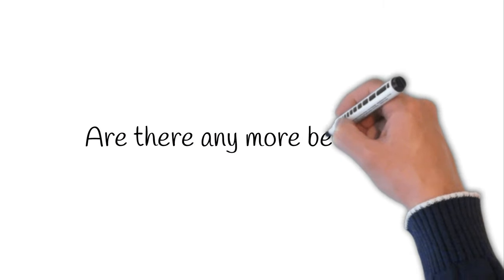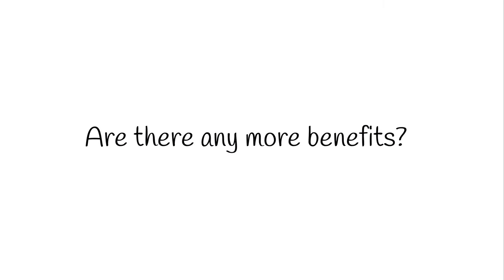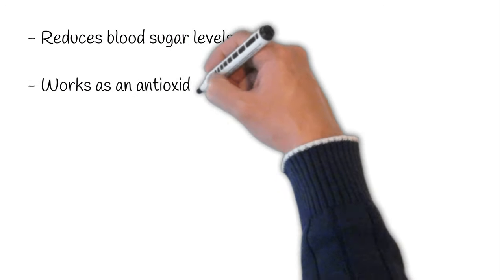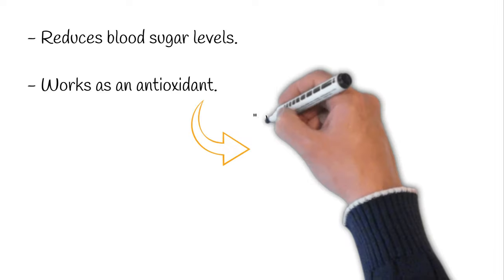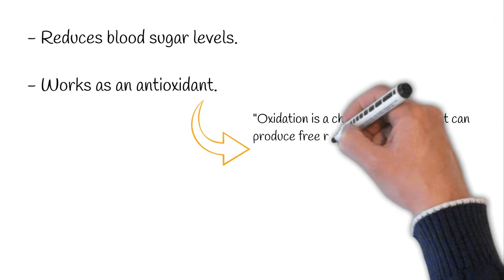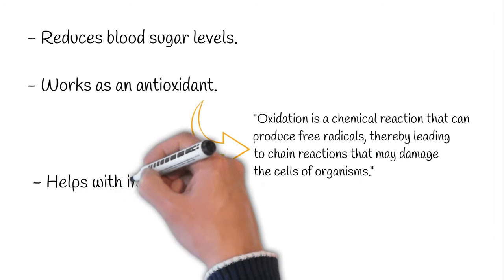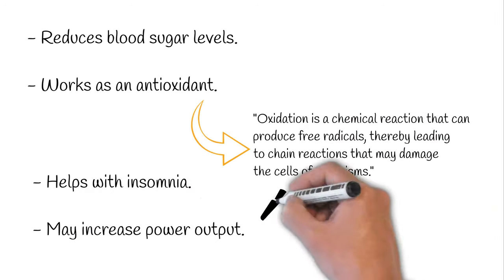Are there any other benefits of using ashwagandha? Absolutely! It can reduce blood sugar levels, it works as an antioxidant so it may decrease inflammation and even have anti-cancer properties. It may help with insomnia and sleep-related issues, and it may even increase power output.